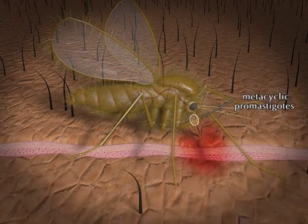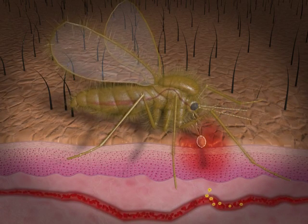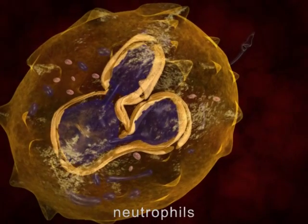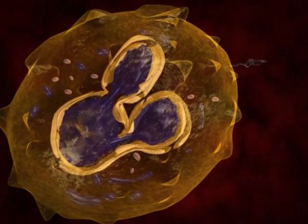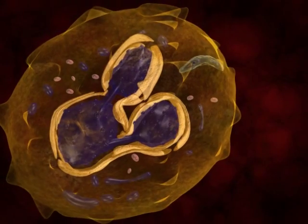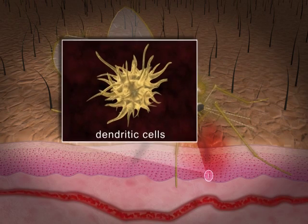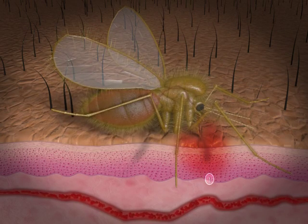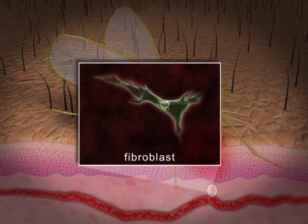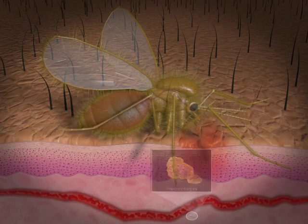The parasite reaches the mammalian skin and subsequently invades different cell types that it encounters, such as neutrophils that are rapidly recruited to the bite site, dendritic cells, fibroblasts, and mainly the macrophages.